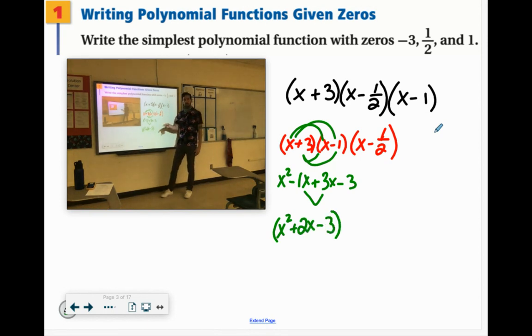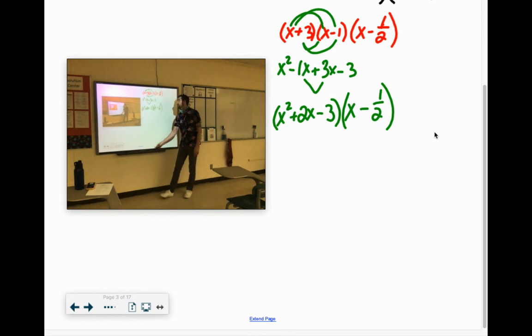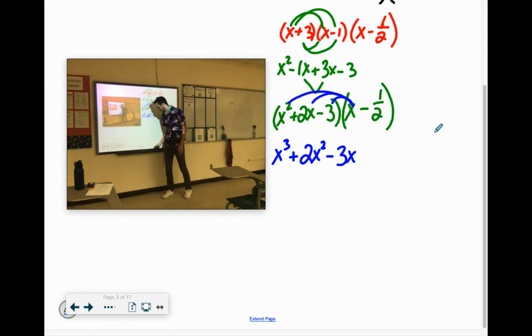We're going to multiply that by this x minus 1 half. So first, if we multiply them all by x, it's just going to bump another x on everything. So instead of x squared, it would be x to the third. It would be 2x squared. And it would be minus 3x. There it is with the x.